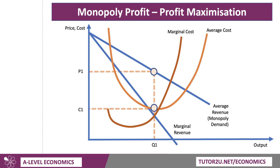Output Q1, there's the unit cost C1. So therefore, this shaded area shows the monopoly profit — the supernormal profit — because we build normal profit into the average cost of the firm. So that looks like quite a high markup.